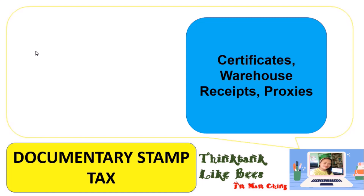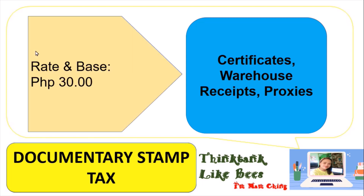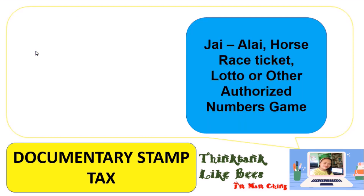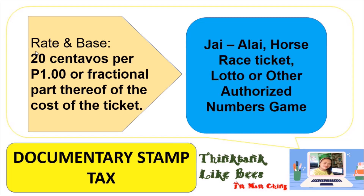For certificates — such as warehouse receipts and proxies — the rate and base is a fixed 30 pesos. Whatever the certificate, warehouse receipt, or proxy, you pay a documentary stamp tax of 30 pesos. For winnings from games like Hi-Low, lottery tickets, Lotto, or other authorized numbers games, the computation is: the winnings divided by 1 peso, multiplied by 20 centavos.